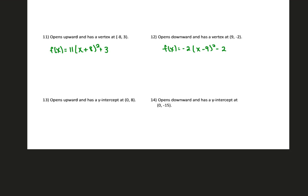Number 13 opens upward and has a y-intercept. When specifying a y-intercept, we write it in standard form. Opening upward, so any positive value for a. b can be whatever you want. We have a y-intercept at 0, 8, so plus 8 at the end. Number 14: opening downward and specifying a y-intercept, so standard form again. f(x) = negative 3x squared plus 2x minus 15.